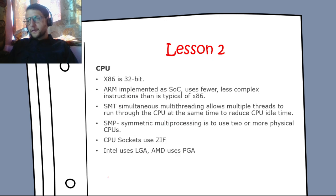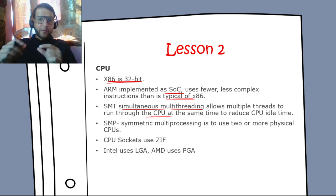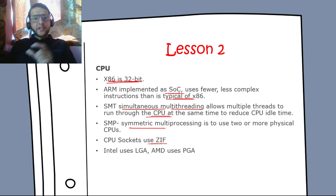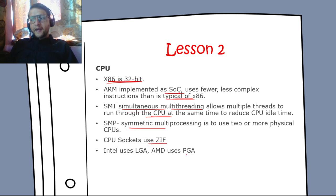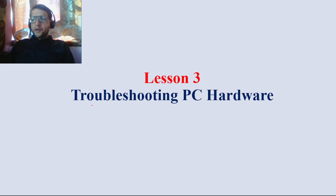x86 is a 32-bit architecture. ARM is implemented as a system-on-chip using fewer, less complex instructions than x86. SMT — Simultaneous Multi-Threading — allows multiple threads to run through the CPU simultaneously to reduce idle time. SMP — Symmetric Multi-Processing — uses two or more physical CPUs. The CPU socket uses ZIF — Zero Insertion Force. Intel uses LGA (Land Grid Array) and AMD uses PGA (Pin Grid Array).